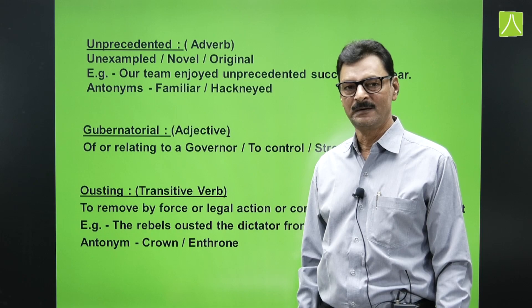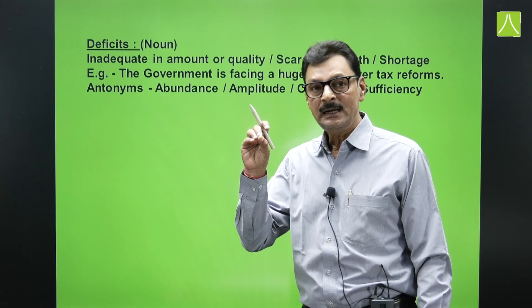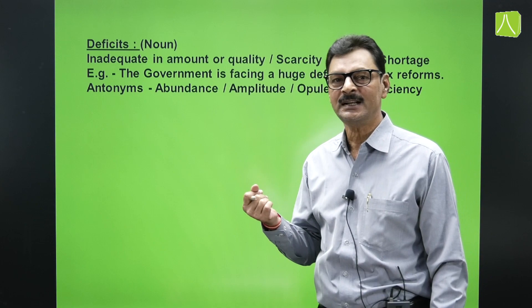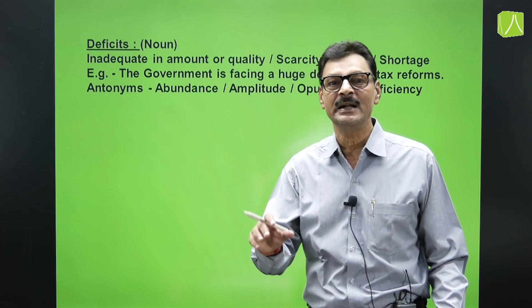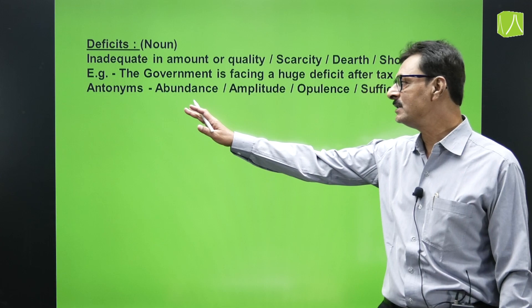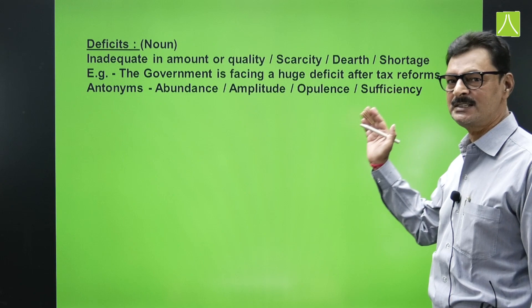Next word: 'deficit,' an easy word used as a noun, meaning inadequate in amount or quantity — a shortage or lack. Synonyms include lack, shortage, scarcity, and dearth. Example: 'The government is facing a huge deficit after the tax reforms.' Antonyms are abundance, adequate, amplitude, opulence, and sufficiency.